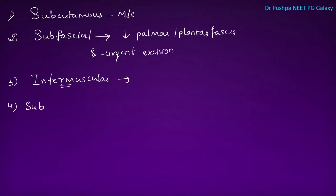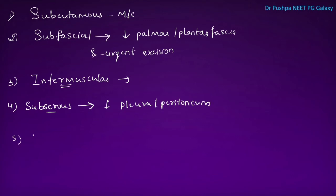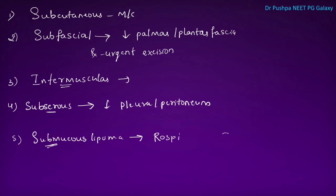Subserous lipoma is present beneath the serosa — that is, beneath the pleura or peritoneum. Submucosal lipoma is very rare, usually seen in the respiratory or GI tract, wherever mucosa is present.